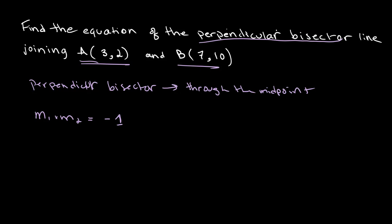So we can start by finding the midpoint. The midpoint of AB will be 3 plus 7 over 2, and our y coordinate is 2 plus 10 over 2. And this gives us 10 over 2, which is 5, and 12 over 2, which is 6. So (5, 6) is the coordinate of our midpoint.